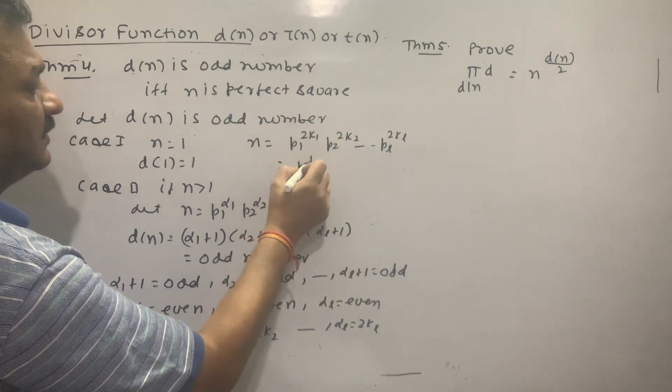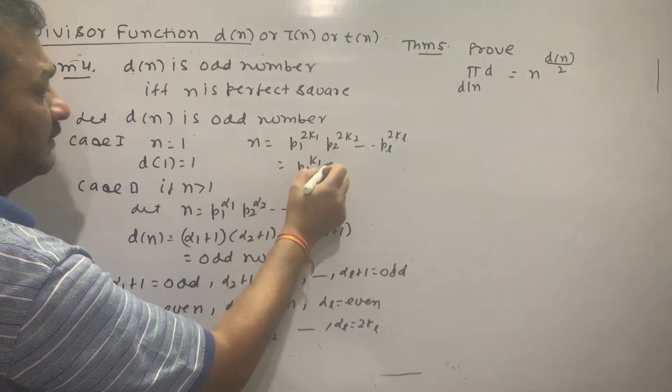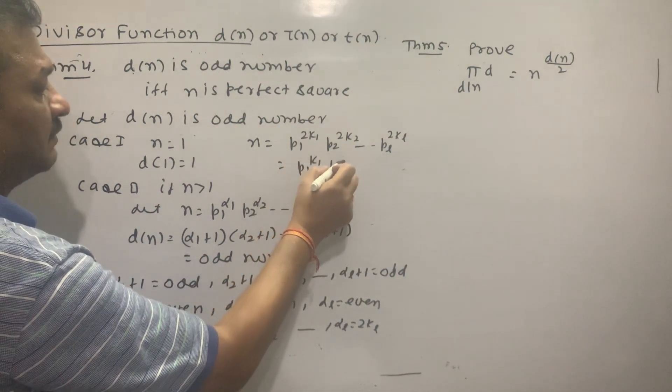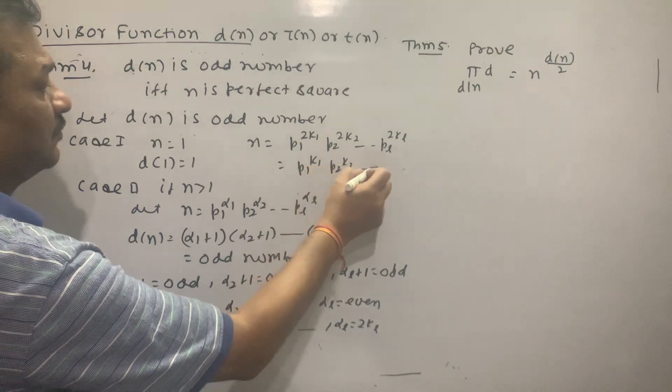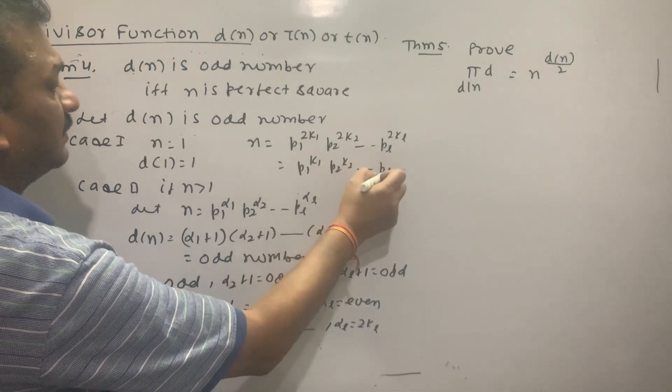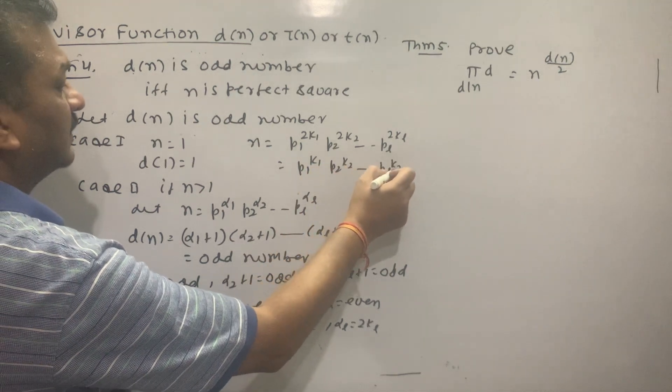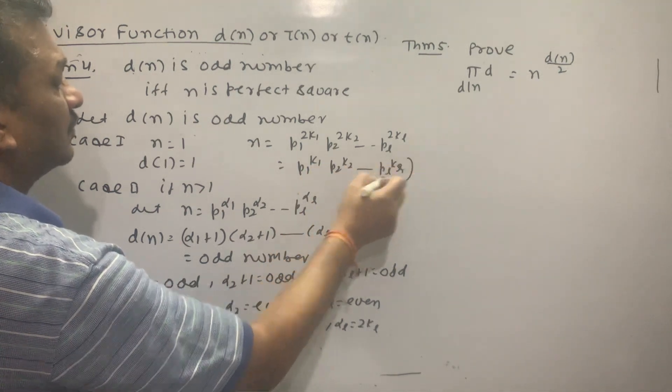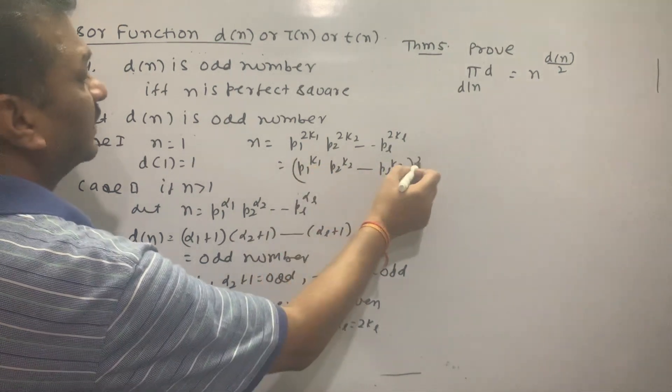Therefore n equals (p₁^k₁ · p₂^k₂ · ... · pᵣ^kᵣ)², which is a perfect square.